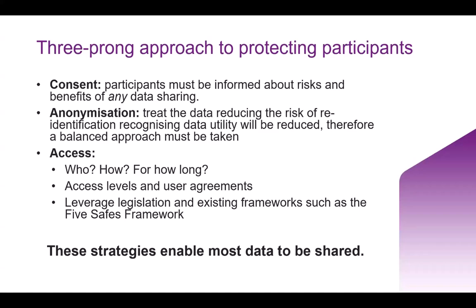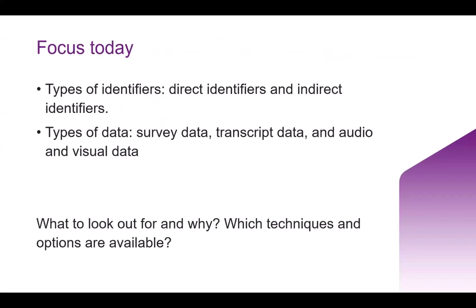All three of these elements combine to form a stronger ethical grounds for sharing and processing data. The focus today is on the types of identifiers — both direct identifiers and indirect identifiers — discussing the most common indirect identifiers and looking at different types of data such as survey data and transcript data, as well as audio and visual data. We'll establish key terminology and briefly touch on additional considerations for that three-prong approach, including consent and access control.